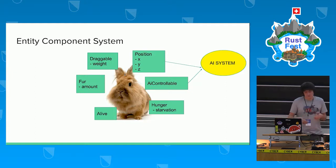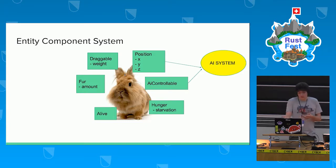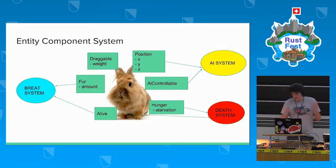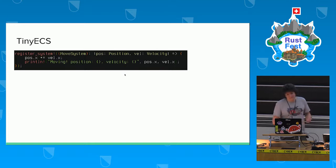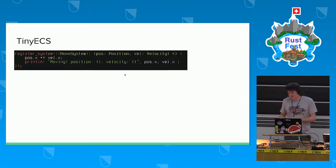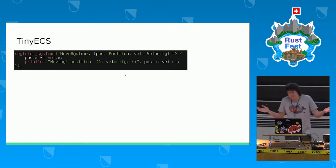With that approach, I can control the behavior of objects only through data. For instance, I can remove a controllable component and that rabbit will not be controllable by artificial intelligence. I have many systems — a breath system when the rabbit is alive, a death system when starvation is too high. The first thing I built in Rust was a library for the Entity Component System. It's the first thing I made, so I can't recommend it to anyone, but it still works. I'm waiting for the moment when my needs outgrow it.